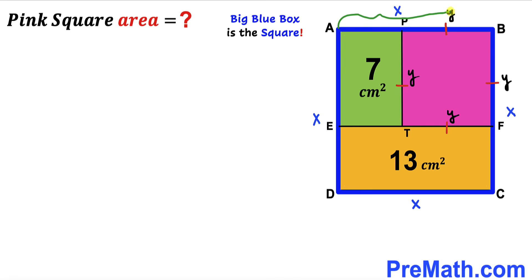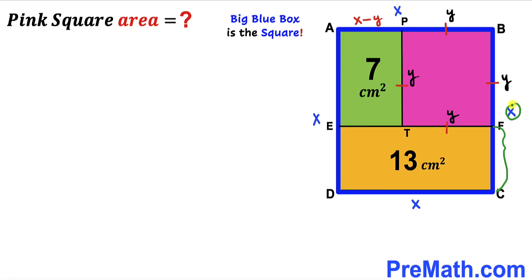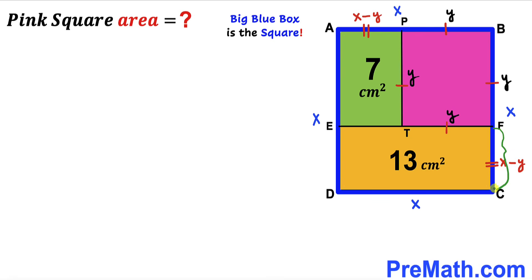We can see that the whole side is X and one segment is Y, so segment AP has length X minus Y. Likewise, segment FC is also X minus Y. These two sides are congruent, and since corresponding sides of the green and orange rectangles share this relationship, there must be a proportional connection between the rectangles' dimensions.